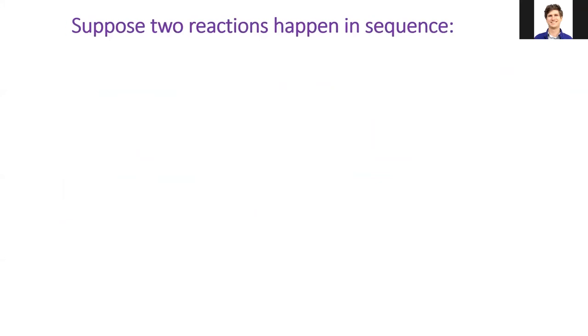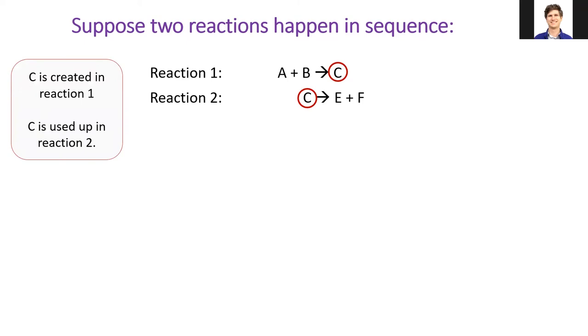Suppose two reactions happen in this sequence. First, in reaction 1, A and B come together to form C. Then, in reaction 2, C decomposes into E and F. In other words, C is created in reaction 1 and used up in reaction 2. If we add up all the reactants and all the products for these two reactions, we get the formula for the overall reaction.